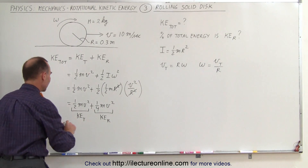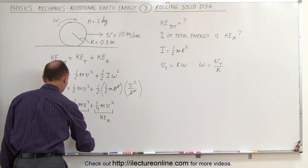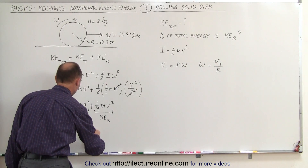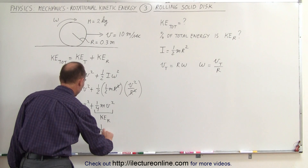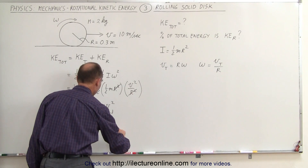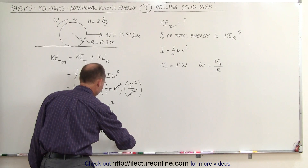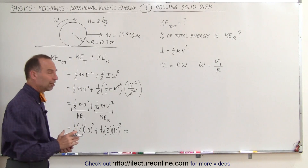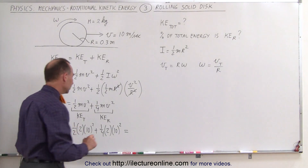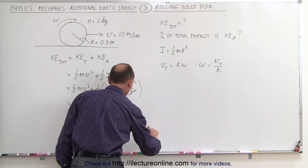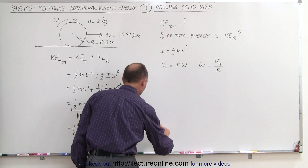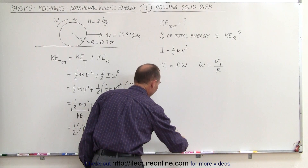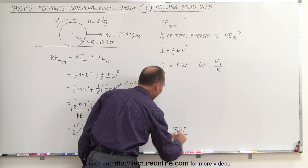Now we can plug in the values. This is equal to one half times the mass of two kilograms times the velocity squared, ten squared, plus one quarter times two kilograms times ten squared. The kinetic energy will be in joules: 100 joules for the translational kinetic energy plus 50 joules for the rotational kinetic energy, for a total of 150 joules.